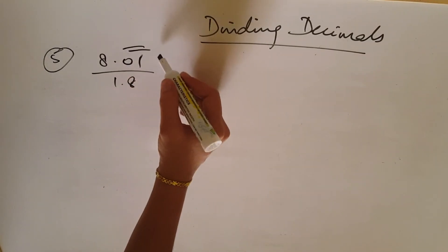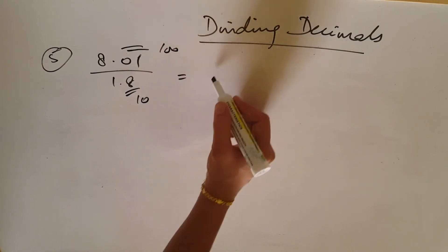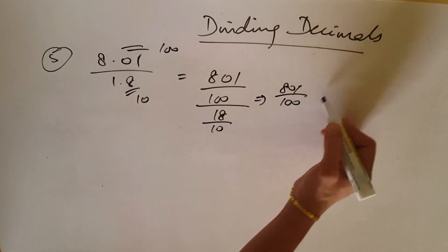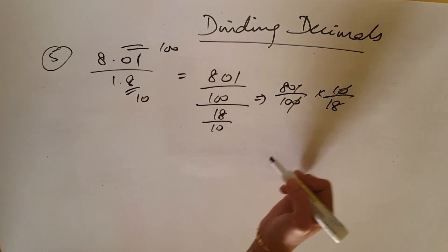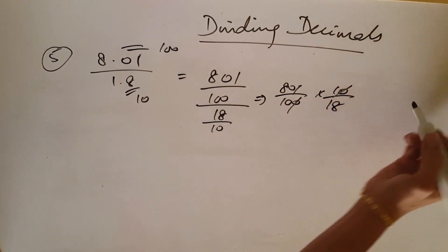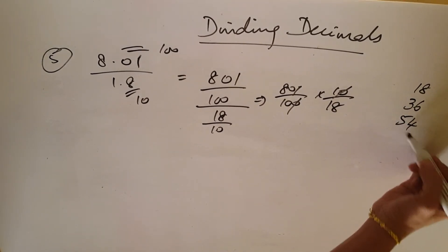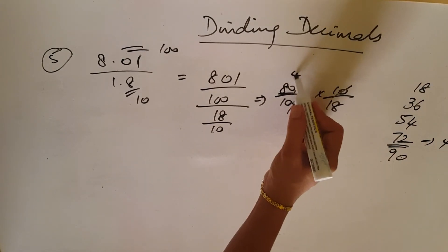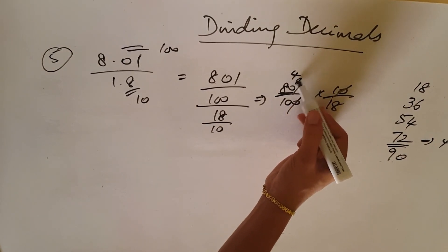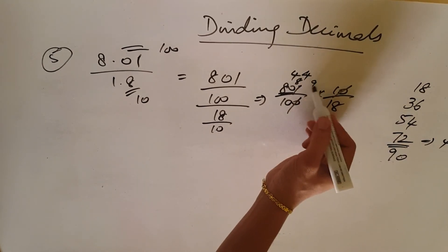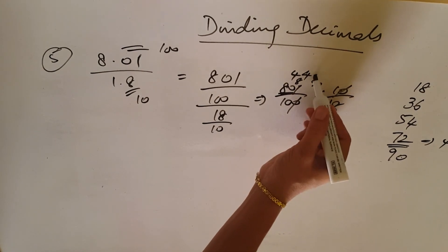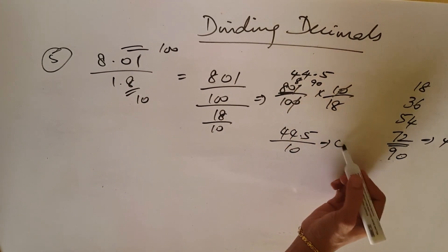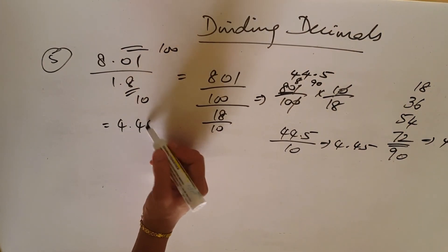Another method for 8.01 divided by 1.8: 8.01 is at the 100th place, so write 801 over 100. 1.8 is at the 10th place, so write 18 over 10. This becomes 801 over 100 multiplied by 10 over 18. One zero cancels. Dividing 801 by 18 using the table — 4 times 18 is 72, remainder 8; bring down 1 to get 81, again 4 times; remainder 9, place 0, 5 times 18 is 90. So 44.5 divided by 10 equals 4.45. The answer is 4.45.